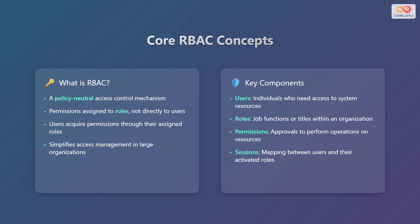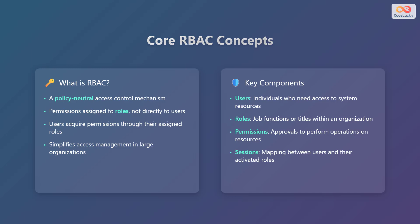In RBAC, permissions are assigned to roles, not directly to users. Users acquire permissions through their assigned roles. This makes managing access rights much easier, especially in large organizations. Key components include users who need access, roles that represent job functions, permissions to perform operations, and sessions that link users to activated roles.